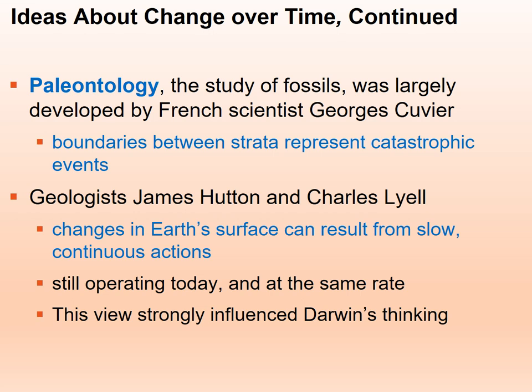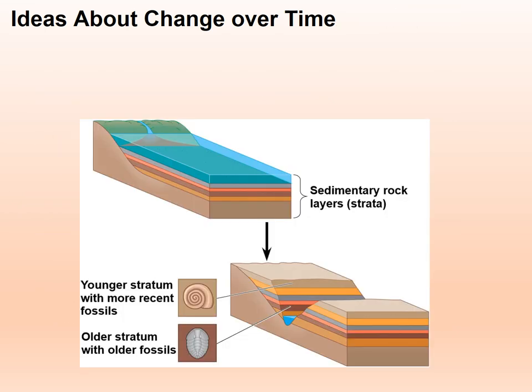Darwin was influenced by all of these scientists. About paleontology — remember we talked about fossil dating. There's absolute and relative dating. Relative dating deals with layers in sedimentary rock called strata. Fossils are basically remains or traces of organisms from the past. The surface layers are more recent, but as you go deeper in the strata, further closer to the earth's core, the fossils are older.